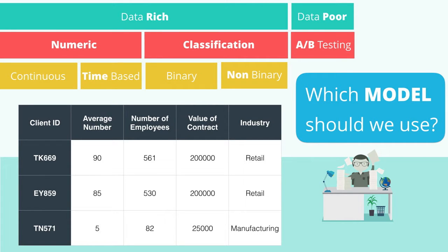Is this a data rich or data poor problem? Let's recall the difference between data rich and data poor. If we have past data on the variable we're trying to predict, then we're data rich. Otherwise, we're data poor.